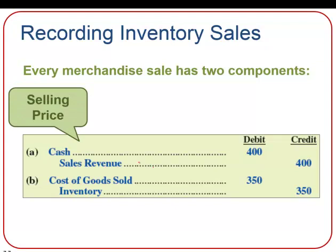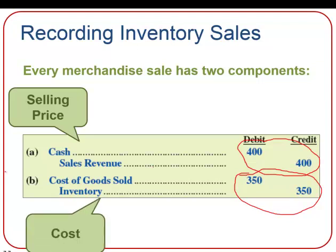Every merchandise sale has two journal entries. One is to record the actual revenue, and one is to record the reduction of inventory. In this example, the first entry records an increase to cash and an increase to revenue for the selling price of $400. The second entry moves inventory out of the inventory account and reports it as cost of goods sold at the cost to the business — $350. The profit on this transaction is $50, the difference between revenue and cost of goods sold.